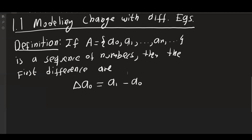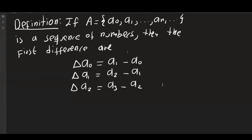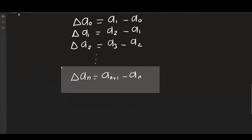Then delta of A-one equals A-two minus A-one, delta of A-two equals A-three minus A-two, and so on. In general, delta of A-n equals A-(n+1) minus A-n. This is the nth difference.